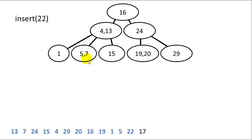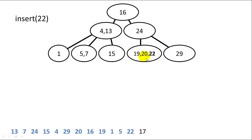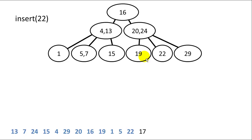Next we insert 22 — it's greater than 16 and less than 24, so it goes into the 19-20 node. We split and promote the middle value, 20, up next to 24, and 19 and 22 become separate children. Lastly, we insert 17, which fits next to 19. That is how the 2-3 tree insert function works.